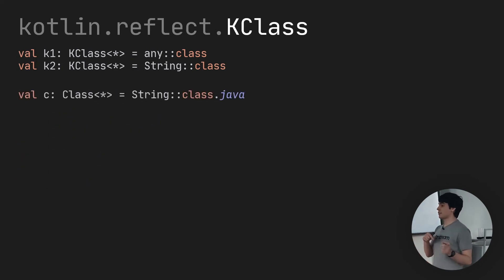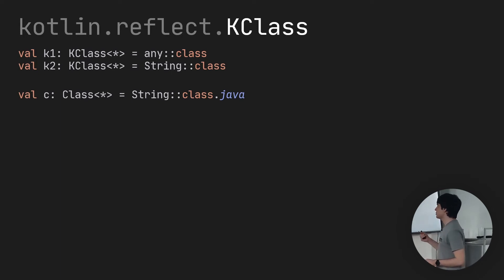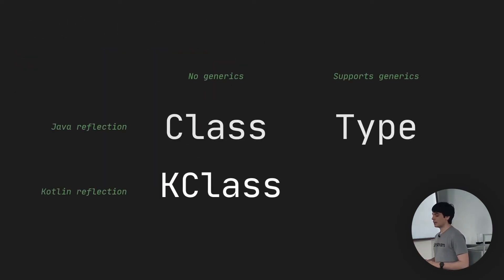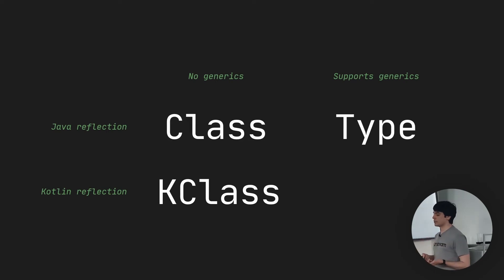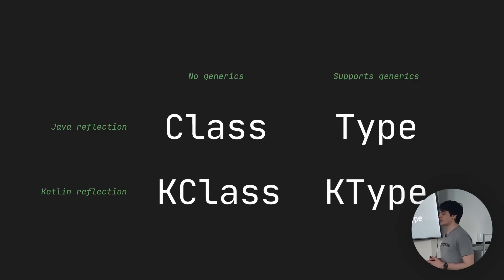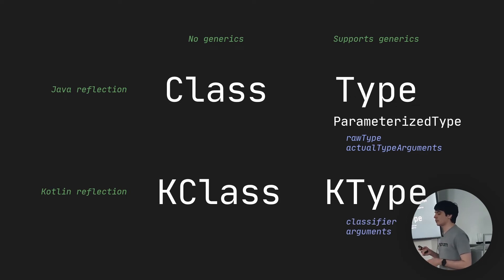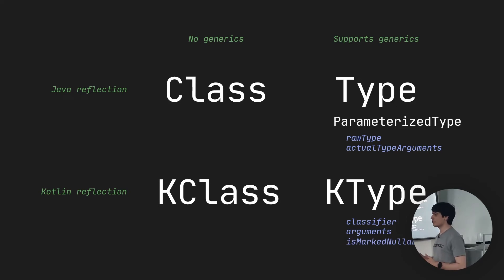You can always go from a KClass back to a regular Class with the .java extension property. This is useful if you're calling APIs where you have to pass in a Class. There is also KType, which is the Kotlin equivalent of Type. While Type needed its subtype ParameterizedType to describe things that have parameters, KType supports this natively — it calls the containing type the classifier, and that can have some number of argument types. And KType, being a Kotlin reflection concept, can also tell you whether a type is nullable, as that's a core part of the Kotlin language.